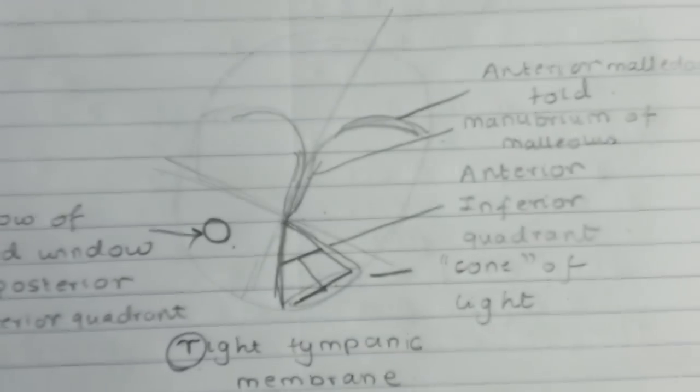We are now drawing the anterior malleolar and the posterior malleolar folds. The logo of Lincoln Park over here represents the lateral process of malleus.